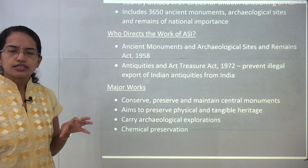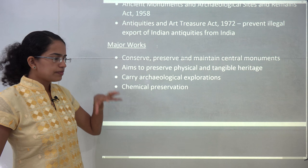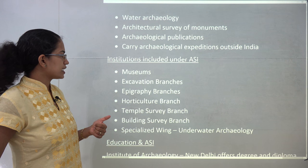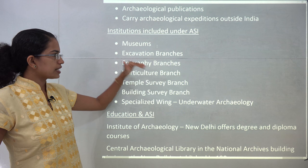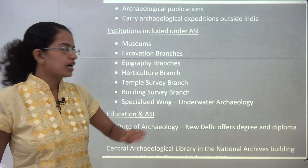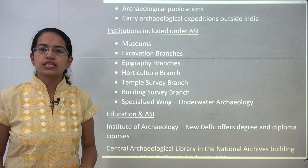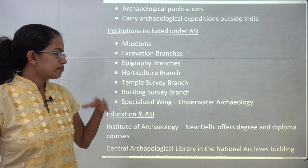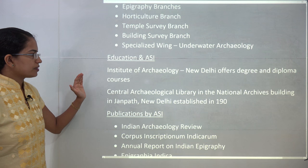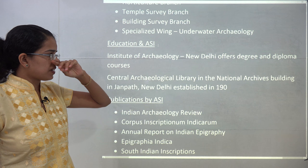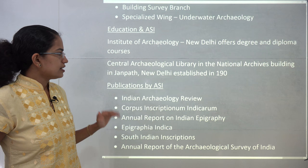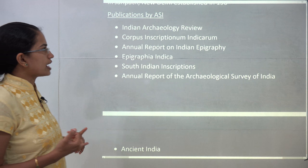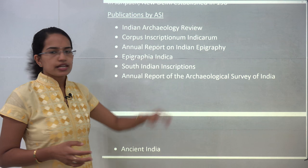The idea is to preserve and conserve natural and cultural monuments, assist in chemical conservation, restoration activities, and work with various expeditions and publications. Institutions under ASI include museums, epigraphic branches, temple survey, building survey, and a specialized branch for underwater archaeology, which deals with remains found below the ocean. For example, Bet Dwaraka, considered the ancient original Dwaraka submerged below the waters in Gujarat. ASI also provides education through the Institute of Archaeology in New Delhi and the Central Archaeological Library in Delhi. Publications by ASI include the National Archaeological Review and the Epigraphica Indica.